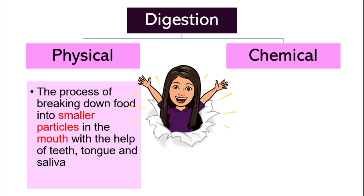Physical digestion happens to break food from bigger pieces into smaller pieces. It's the process of breaking down food into smaller particles in the mouth — for example, when you take a big bite of a burger and chew it into smaller pieces. That is physical digestion, with the help of teeth, tongue, and saliva. It also involves a process called peristalsis, which will be explained further when we look at the esophagus.